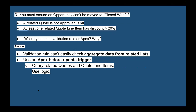You must ensure an Opportunity cannot be moved to Closed Won if a related Quote is not approved or if at least one related Quote Line Item has a discount greater than 20%. Would you use a validation rule or Apex? The answer: validation rules cannot easily check aggregate data from related lists, so use an Apex before-update trigger to query related Quotes and Quote Line Items and apply the validation logic.